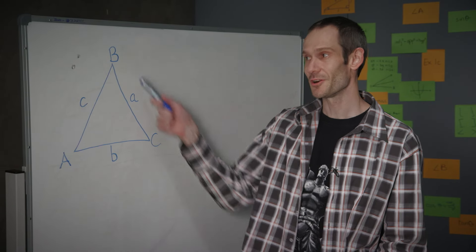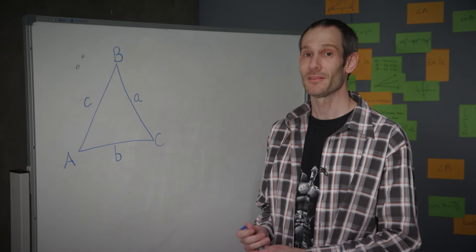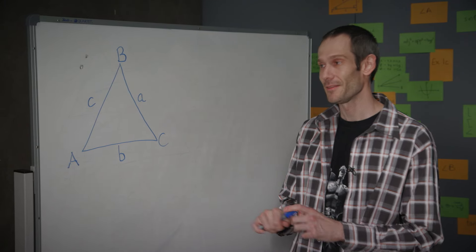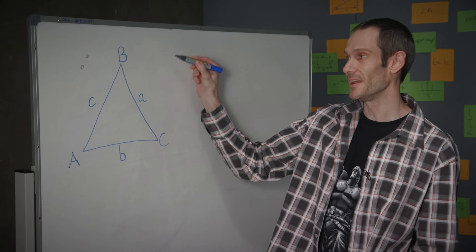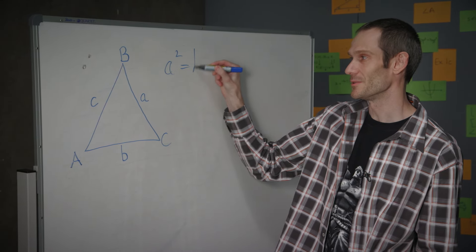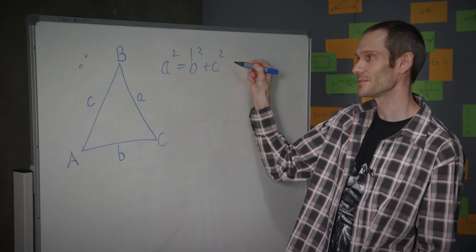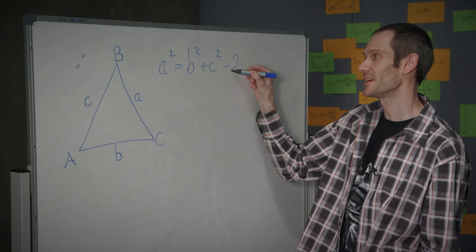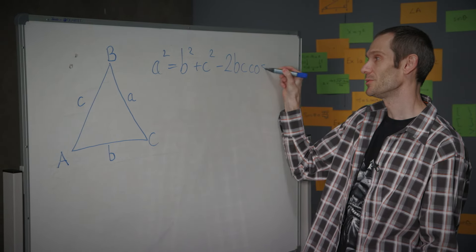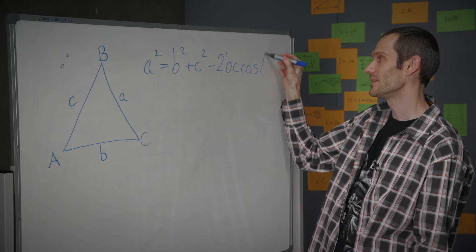For a general triangle ABC, the cosine rule tells us that side length A squared must equal side length B squared plus C squared, take away twice their product, multiplied by the cosine of the angle between the two.